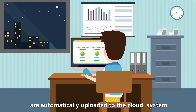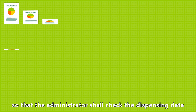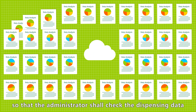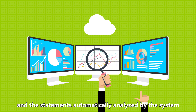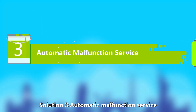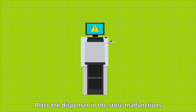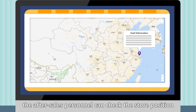Solution 2: Automatic collection and analysis of store data. The history formulas of the stores are automatically uploaded to the cloud system, so that the administrator can check the dispensing data and statements automatically analyzed by the system.